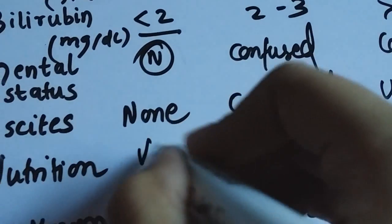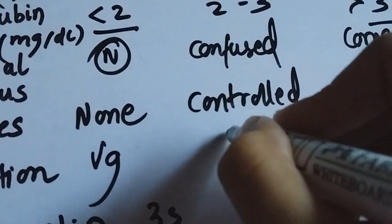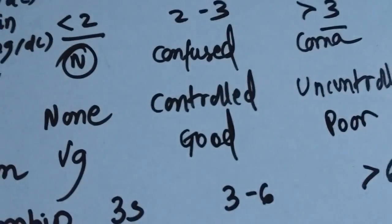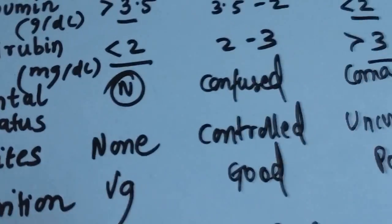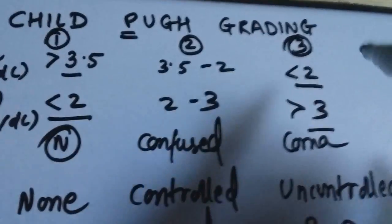For nutrition, if the nutrition is very good, then you give 1 point. If the nutrition is good, then you give 2 points. And if it's poor, then you give 3 points. So, you get the grading, right? If the patient is on the better side, you give less points. And if it's worse, then you give 3 points.